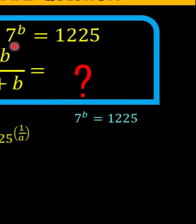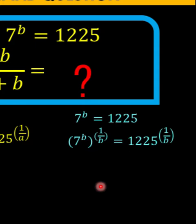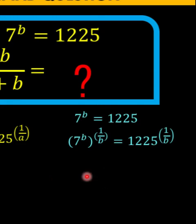From the given 7 raised to b equals 1225, we can also raise both sides of this equation to 1 over b. By the power of power rule, multiplying exponent b times 1 over b gives 1, so the left side simplifies to 7, and we copy the right side: 1225 raised to 1 over b.